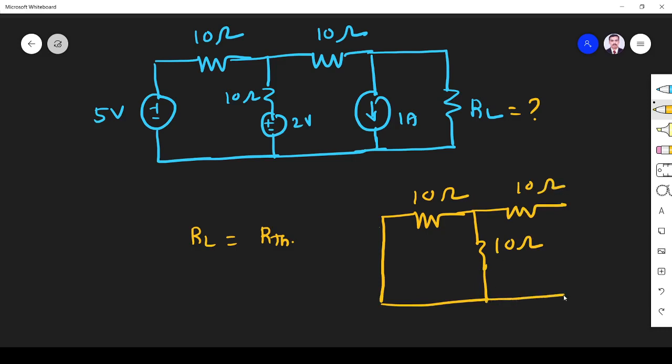Here current source is there. If I remove current source it will become open. Then I have to remove the load. Across this terminal I have to find the resistance. That resistance is called Thevenin resistance.